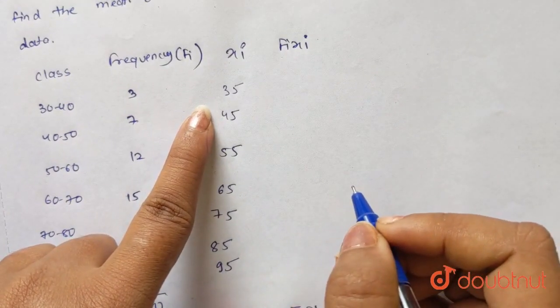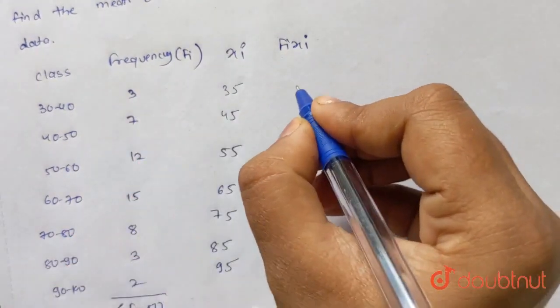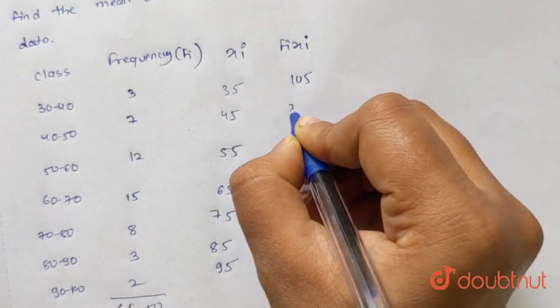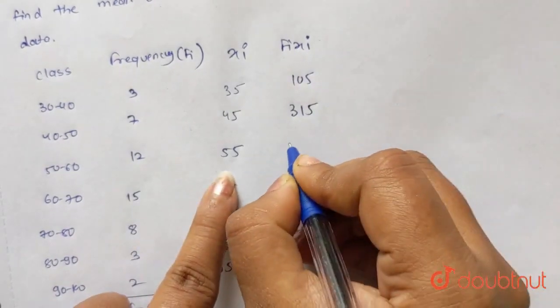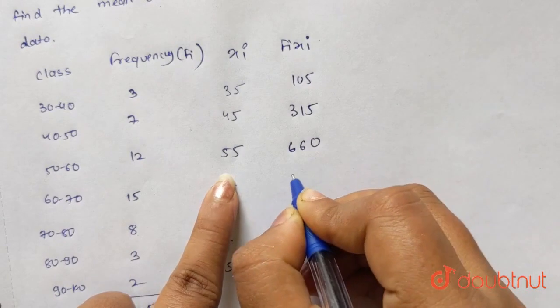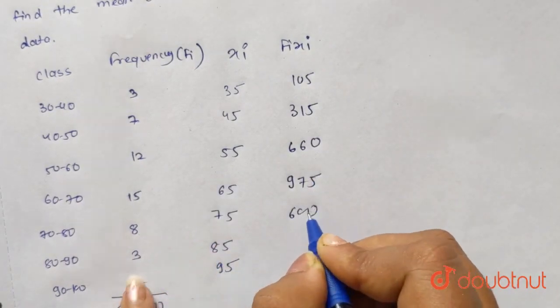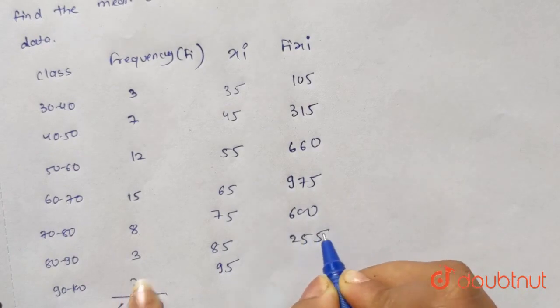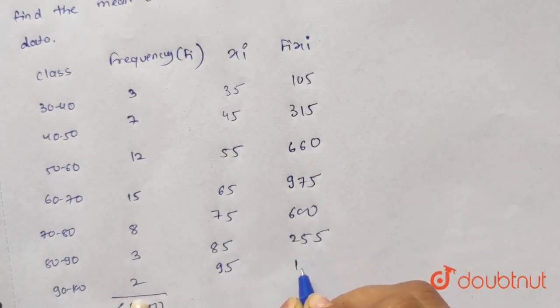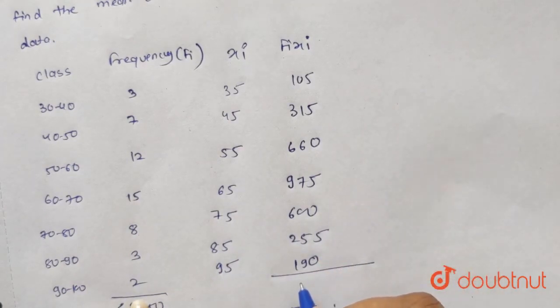If you multiply FI into XI: 35, 3 is 105, 315. Here we get 660, 975, 685, 3 is 255, and 95, 2 is 190. Now add it.